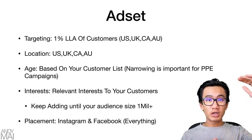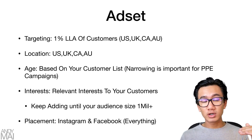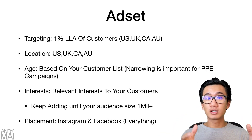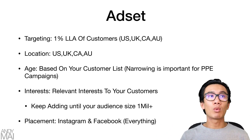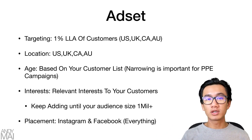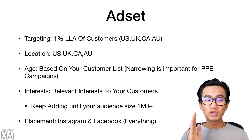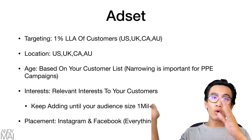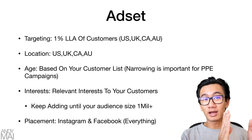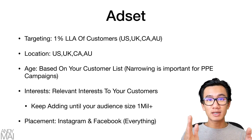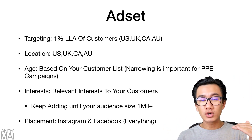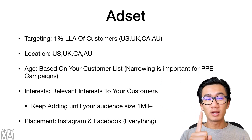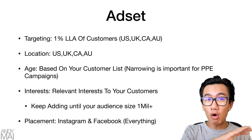For interests, you want to stack a bunch of relevant interests for your customer. Keep adding audiences until the audience size is over one million. When you add that one percent lookalike audience of customers, your audience size will probably be around 2.4 million, but as you layer it with interests it will drop down to around 300,000. You'll have to keep stacking relevant interests to get the audience back over one million. I'll be showing you guys this whole process step-by-step with my own personal brand.